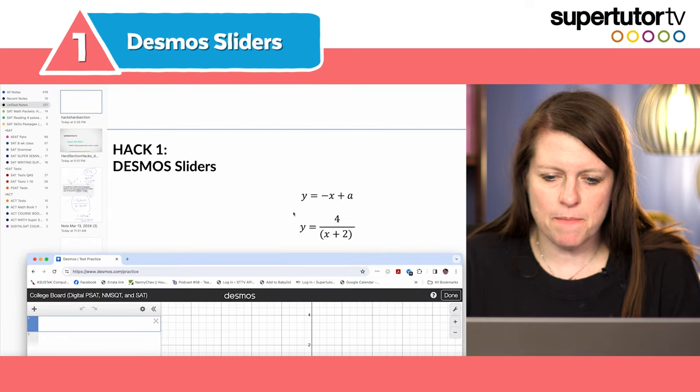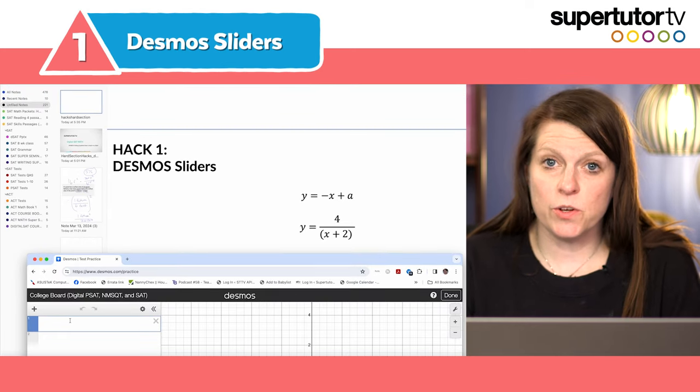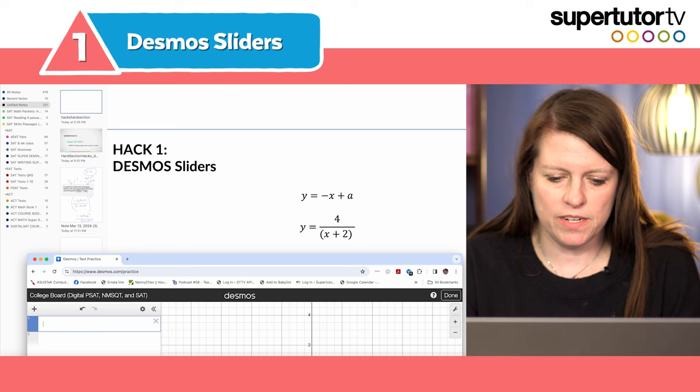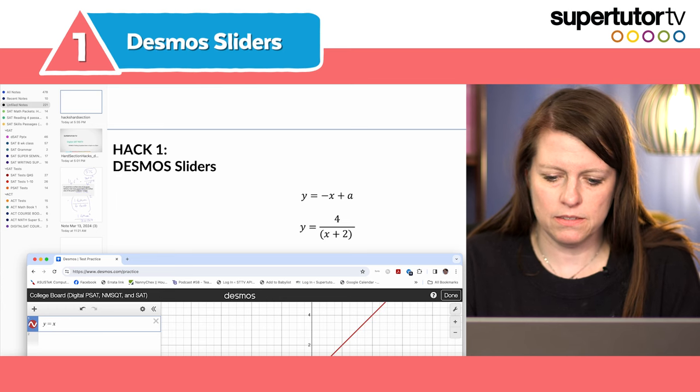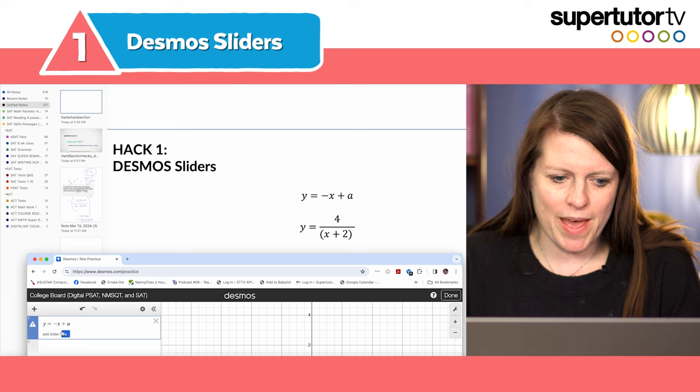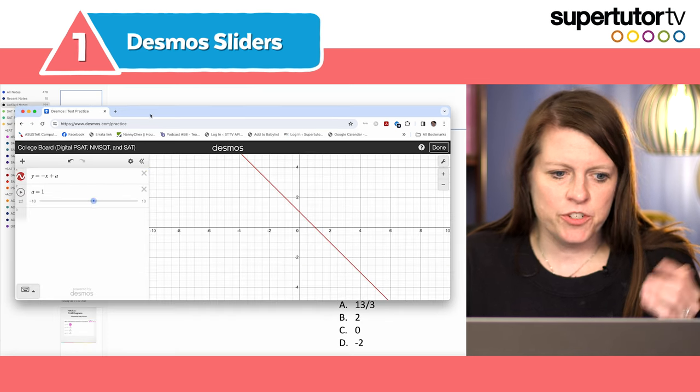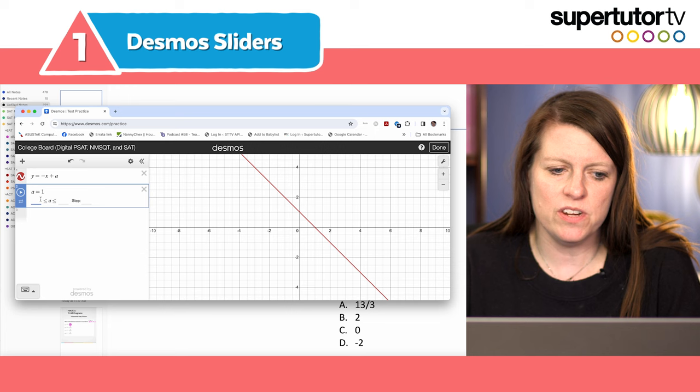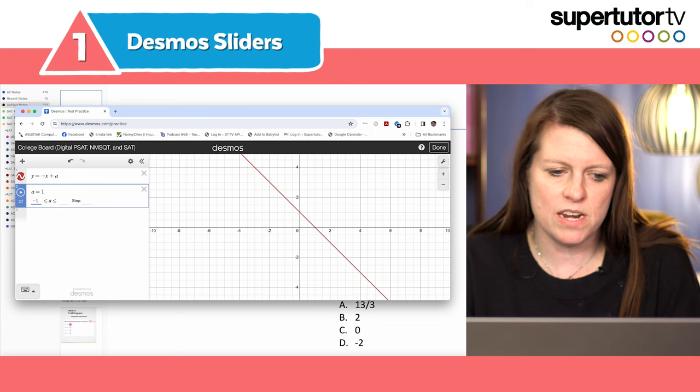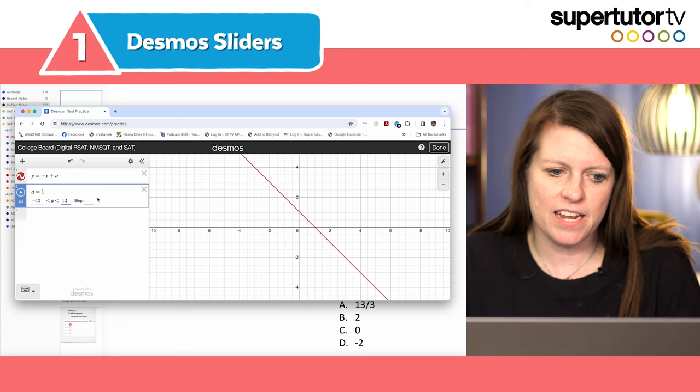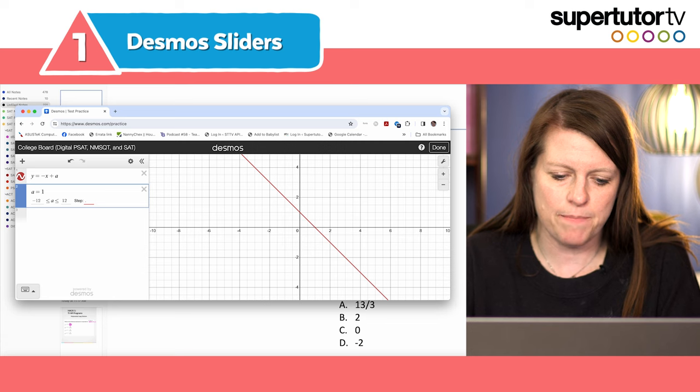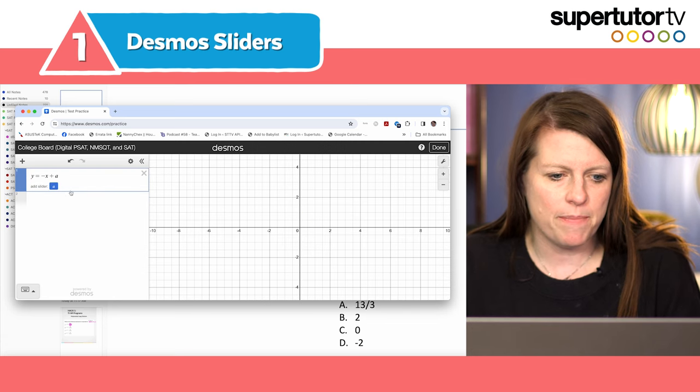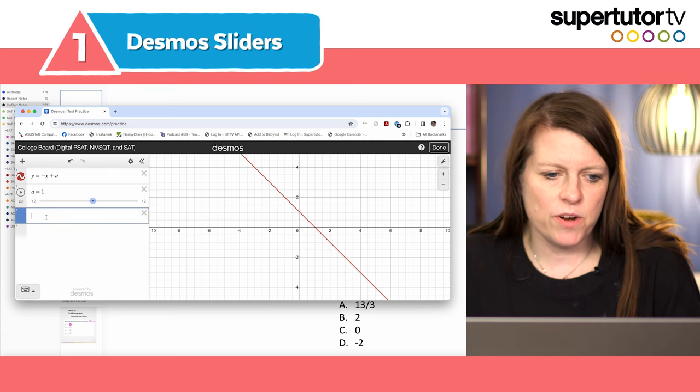So here's Desmos. I'm just gonna type in this equation here and look what happens when I type y equals x negative x plus a boom add slider. Isn't that fun? So just a little tip on how sliders work. If you ever need to change the range because you're not getting where you need to go you can change the range. So if I didn't want negative 10 to positive 10 I can change it to 10 to 12. I can also change the step to like 0.5 and then it'll step up every 0.5. And you can see how that works.